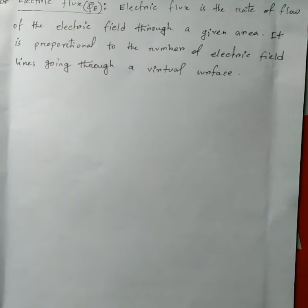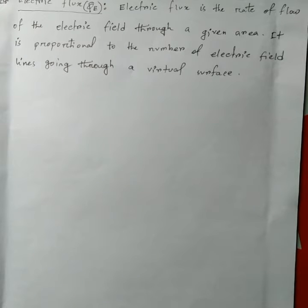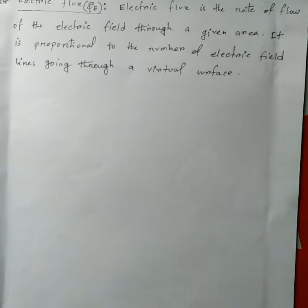We consider a certain amount of electric field lines to describe the wave of the field. Electric flux is the rate of flow of the electric field, or we can say the lines of force, through an area, plane, or surface — that is, electric field lines.